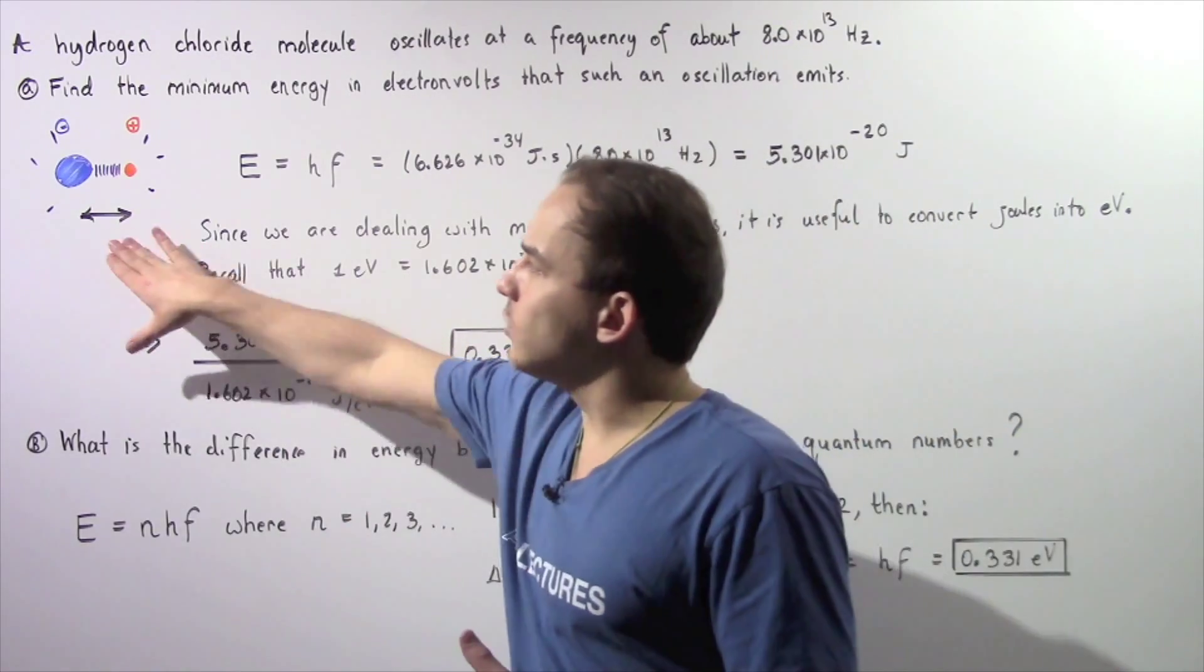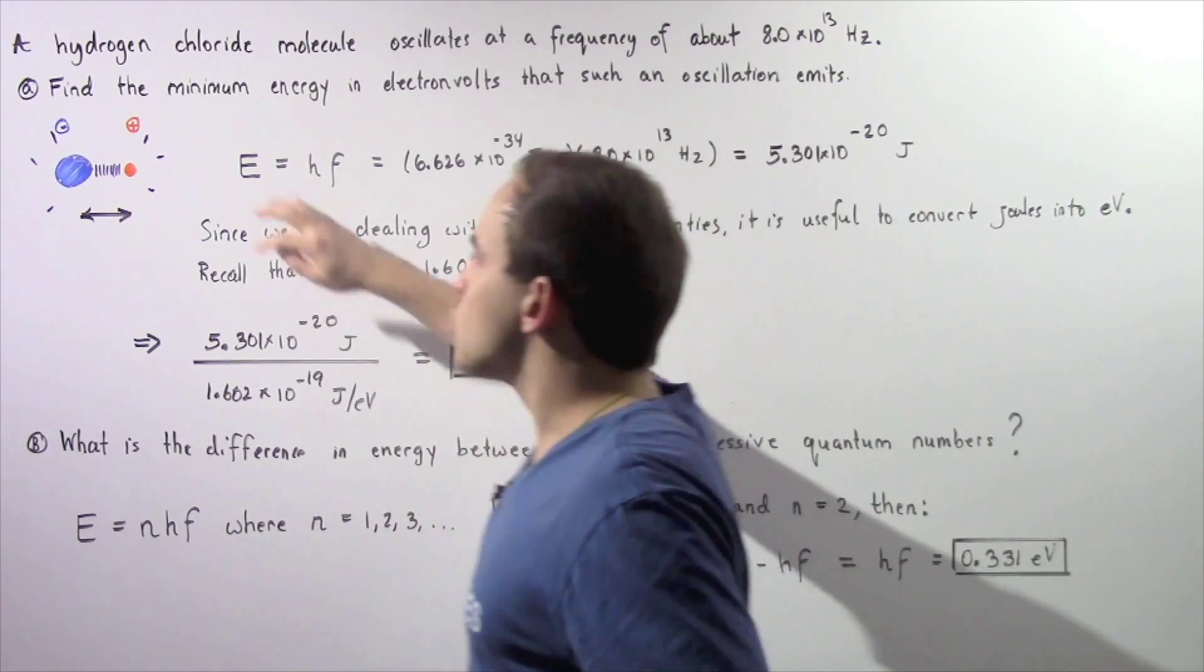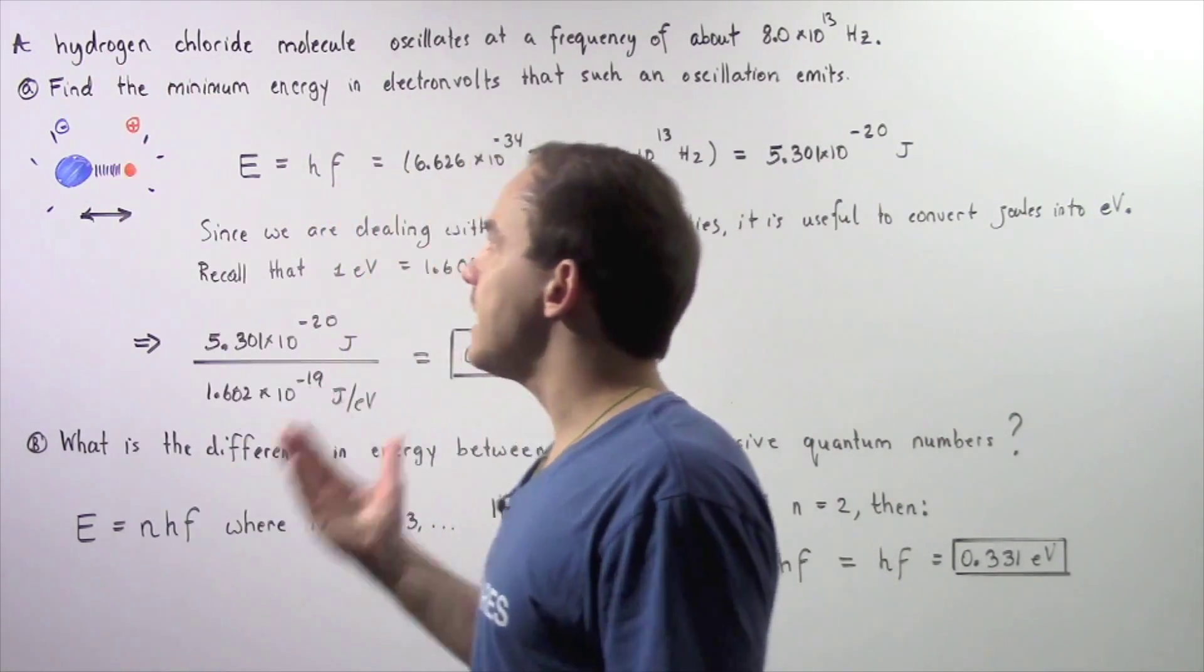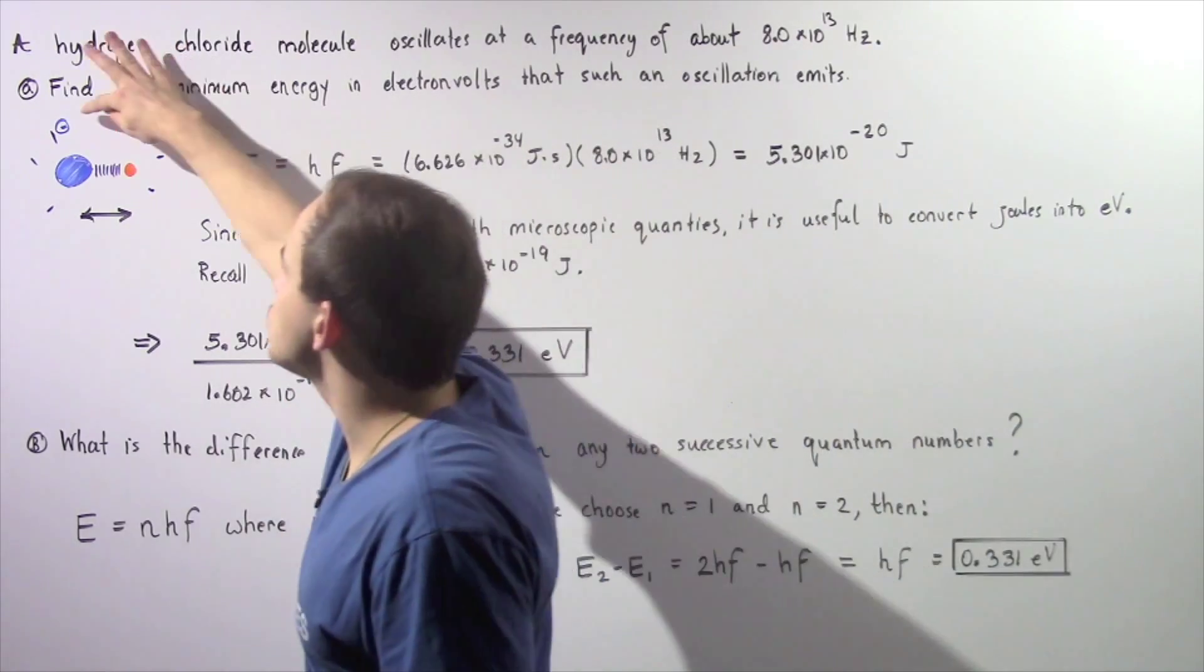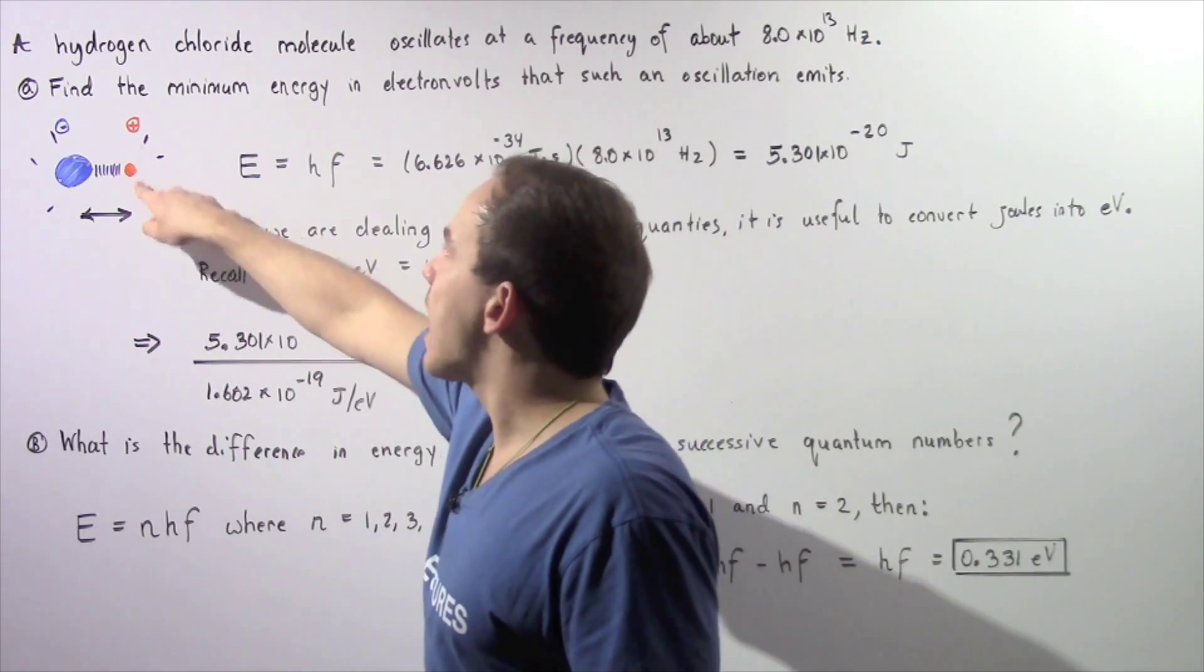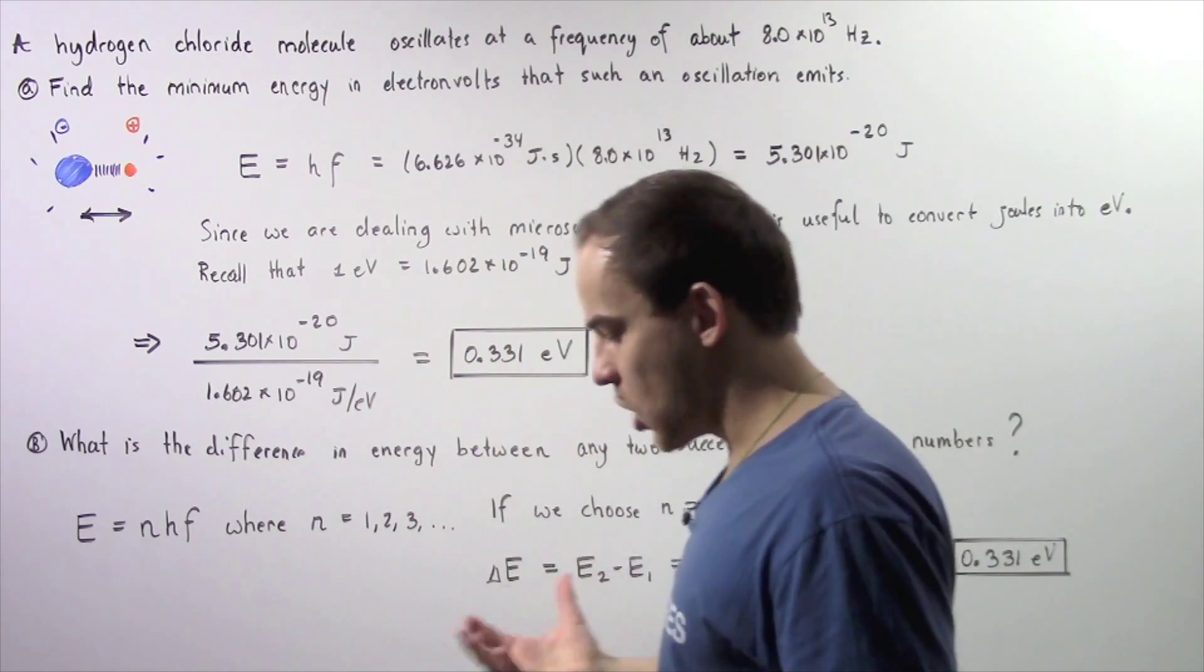So let's look at the following diagram, which describes our oscillating molecule. Let's suppose the blue sphere is our chloride sphere, and it has a partial negative charge. Our H sphere is shown by the orange symbol, and it has a partial positive charge.